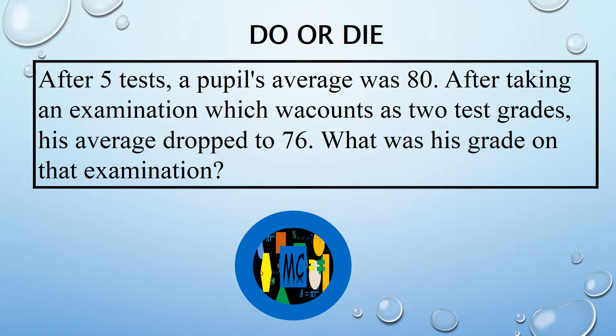After five tests, a pupil's average was 80. After taking an examination which counts as two test grades, his average dropped to 76. What was his grade on that examination?